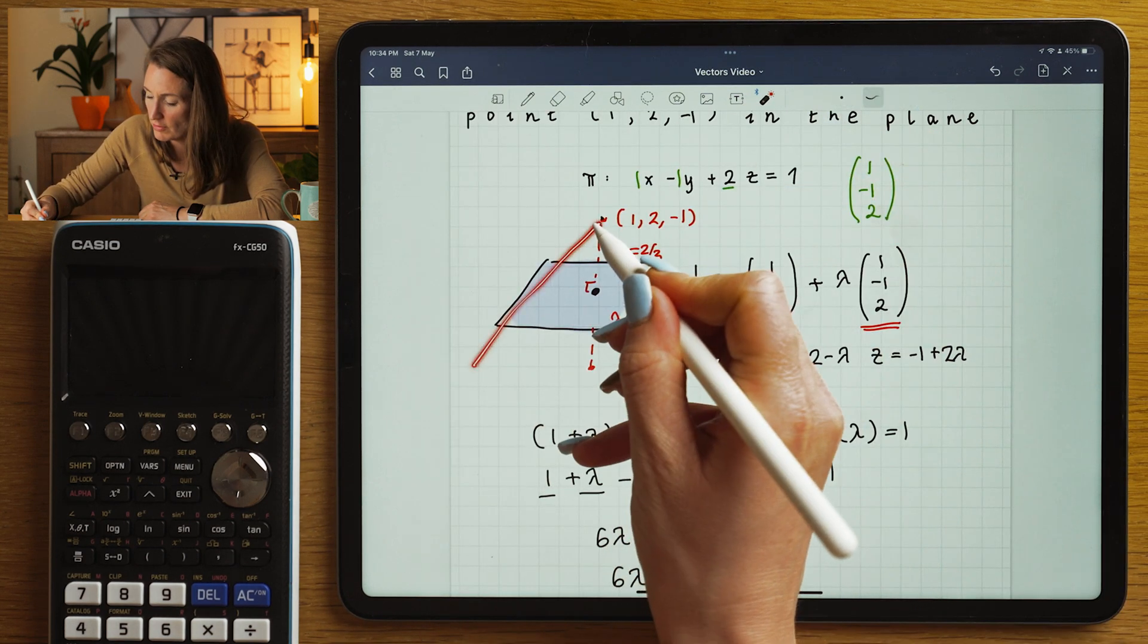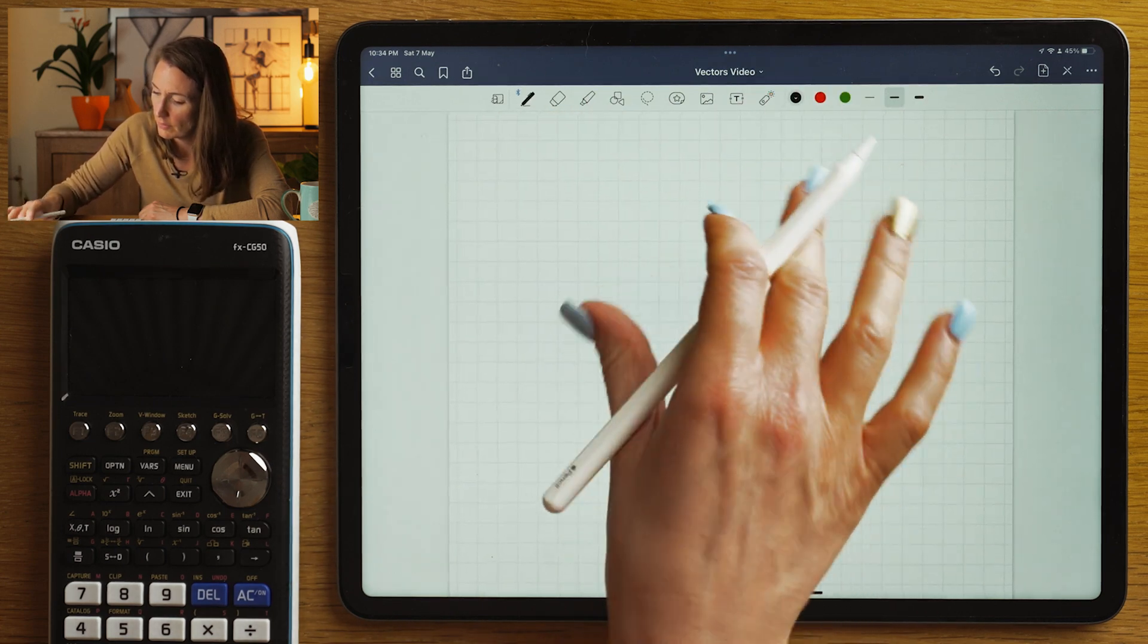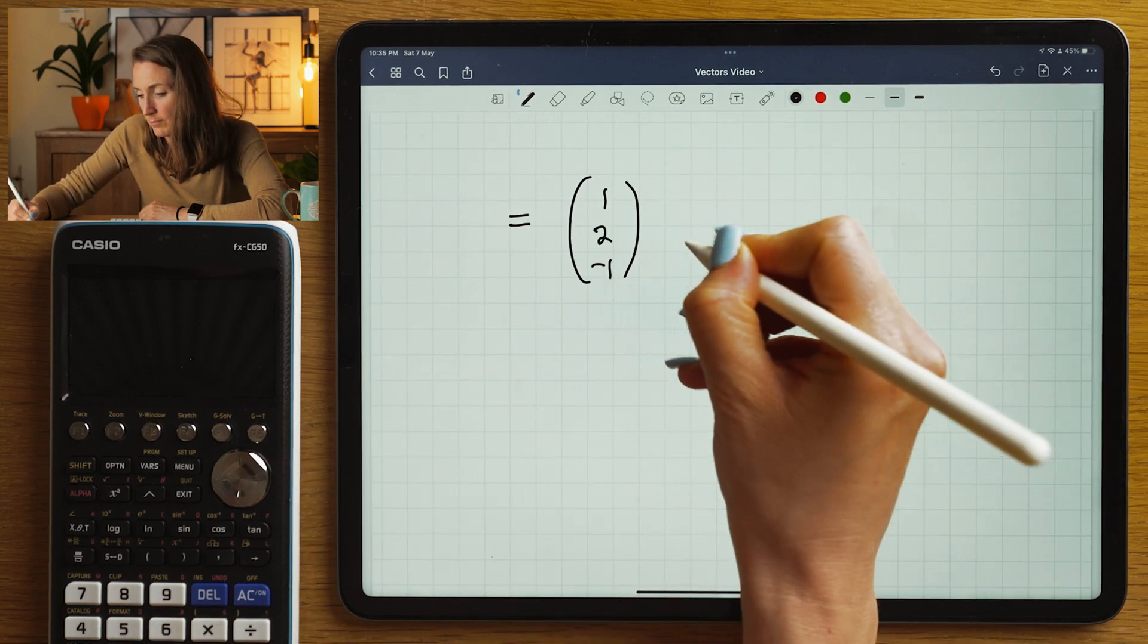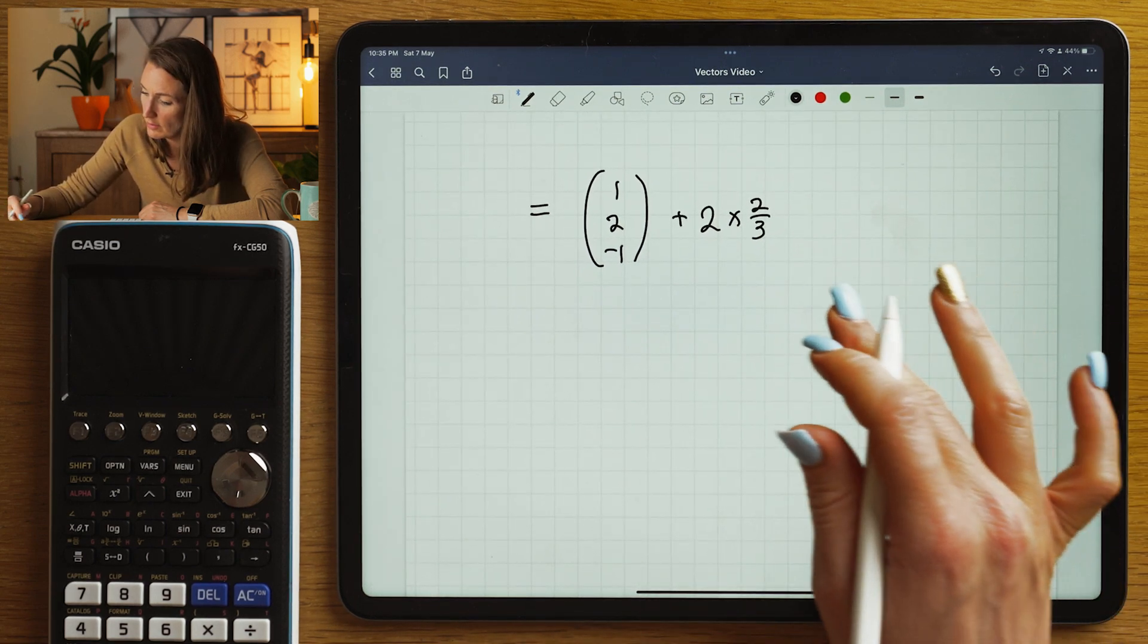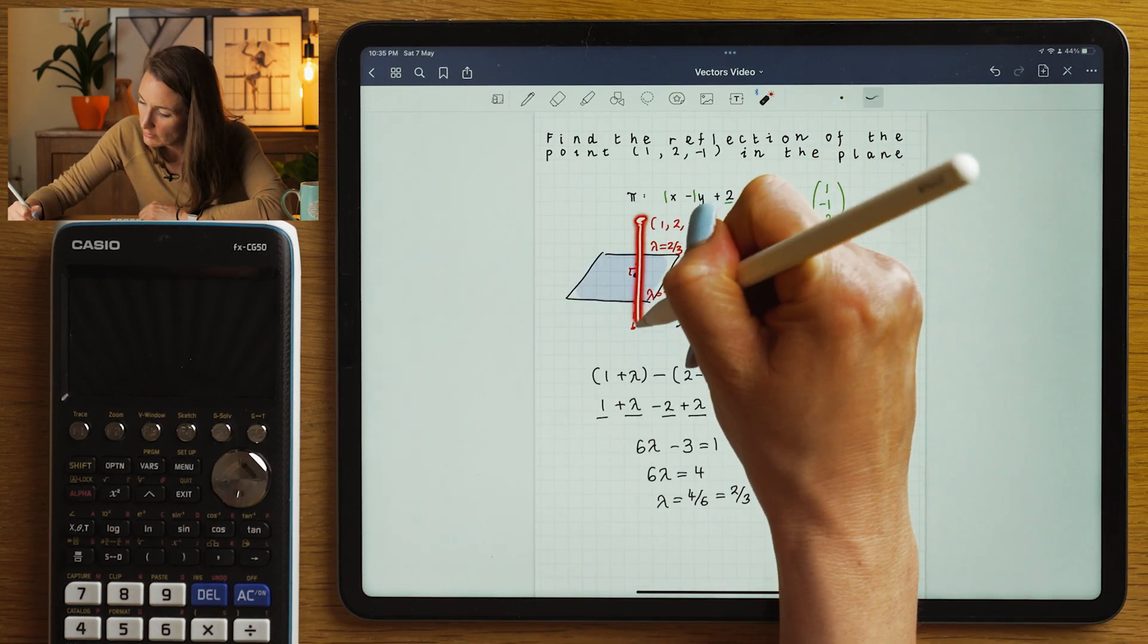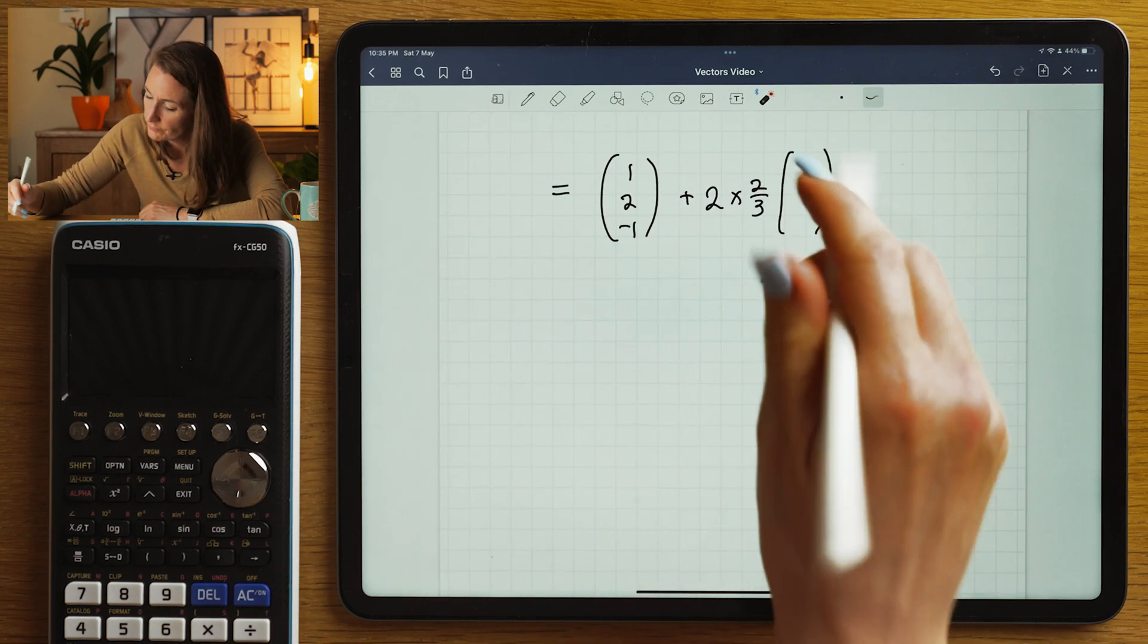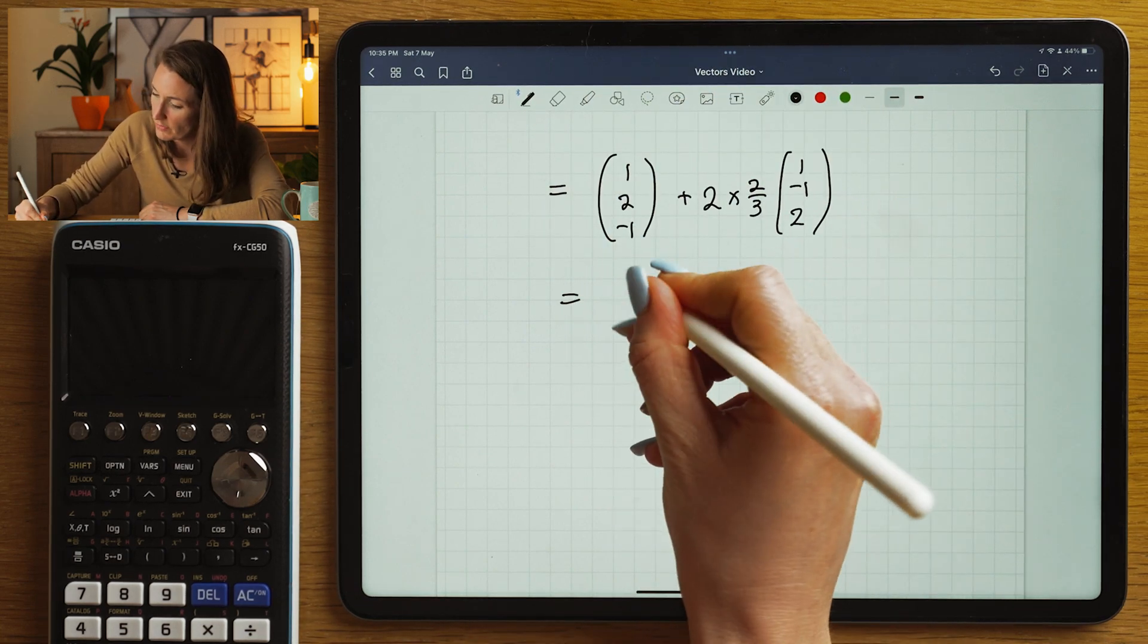First of all, I need to get from the origin to this point here. So I'm going to get the vector, I'm going to move along the vector (1, 2, -1). Then I'm going to need to go two lots of two thirds times by this vector, which will get me from here to here. And it's two thirds times by (1, -1, 2). So let's work that out.